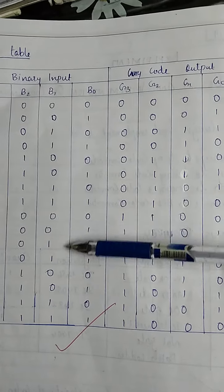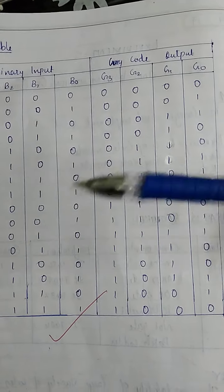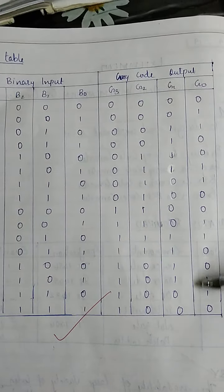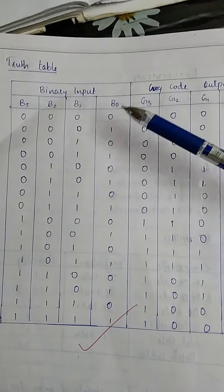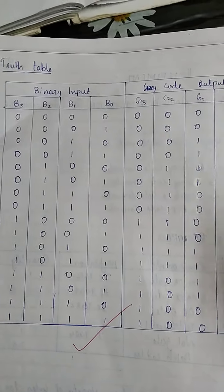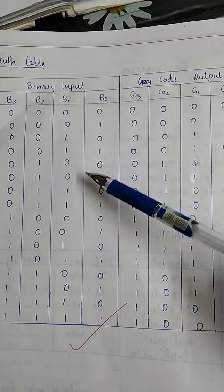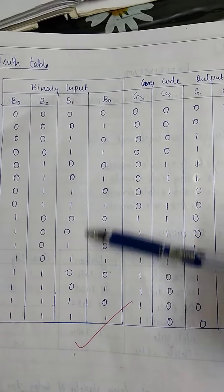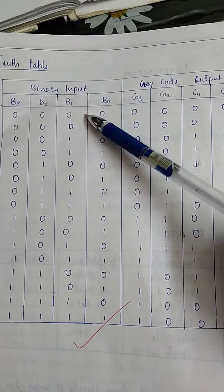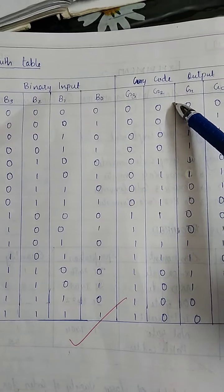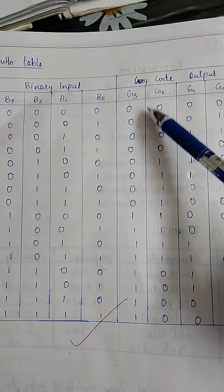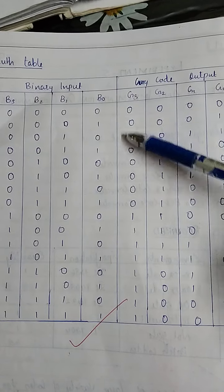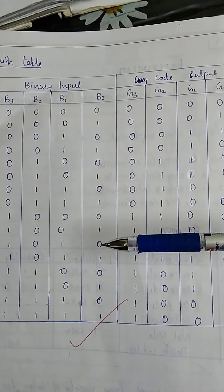What is Binary and what is Gray code? Gray code corresponds to a binary value. That is the Truth Table. The binary input is B3, B2, B1, B0, and the Gray code output is G3, G2, G1, G0. This is the order of G3 we would work with.